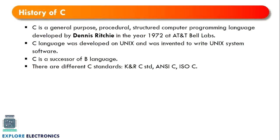Now coming to the C language — let's understand what C language is, why it was built, who developed it, and where it is used. C is a general purpose procedural language which was developed by Dennis Ritchie in the year 1972. C was originally used in developing the Unix operating system. C is a successor of the B language — initially there was a language called B, and later it was developed into C. We have different C standards: K&R C, ANSI C, and C99, which provide certain sets of rules to follow when writing a C program.